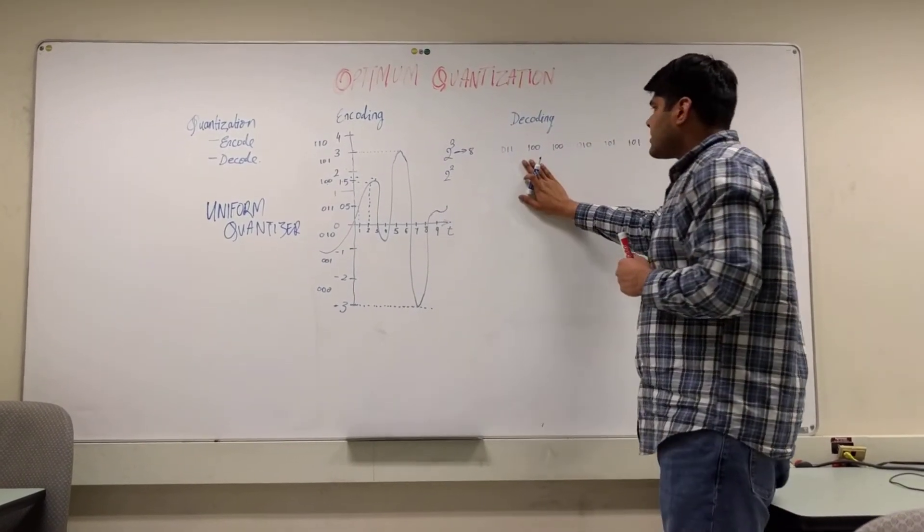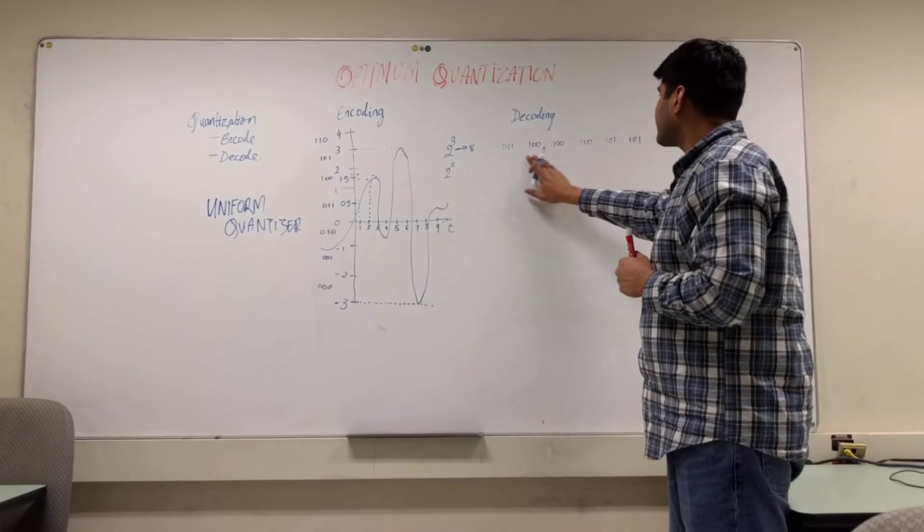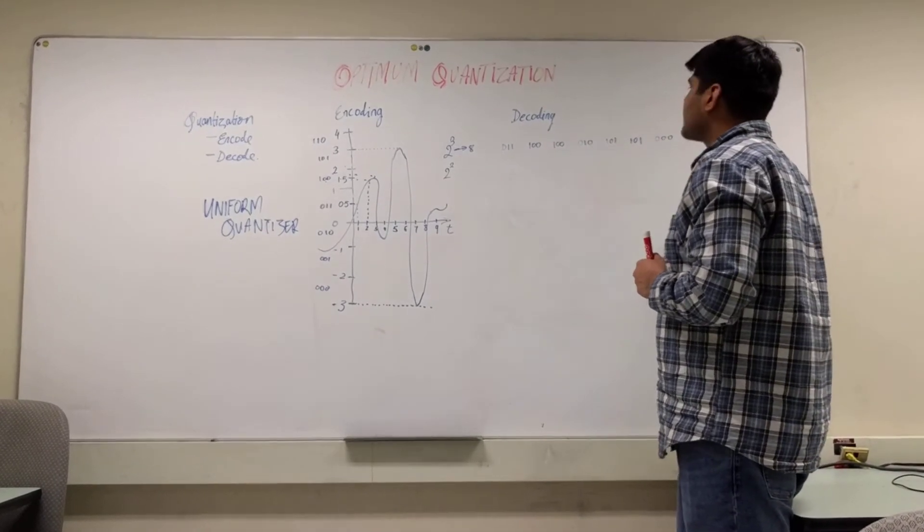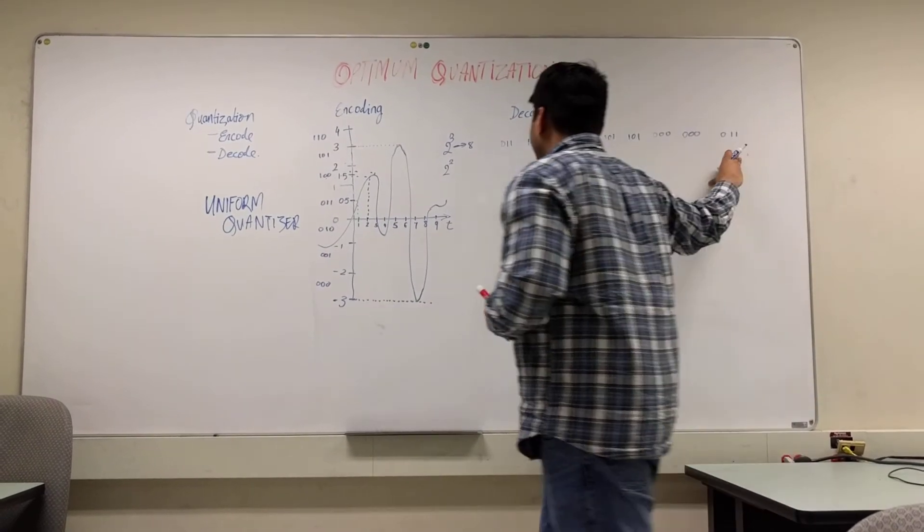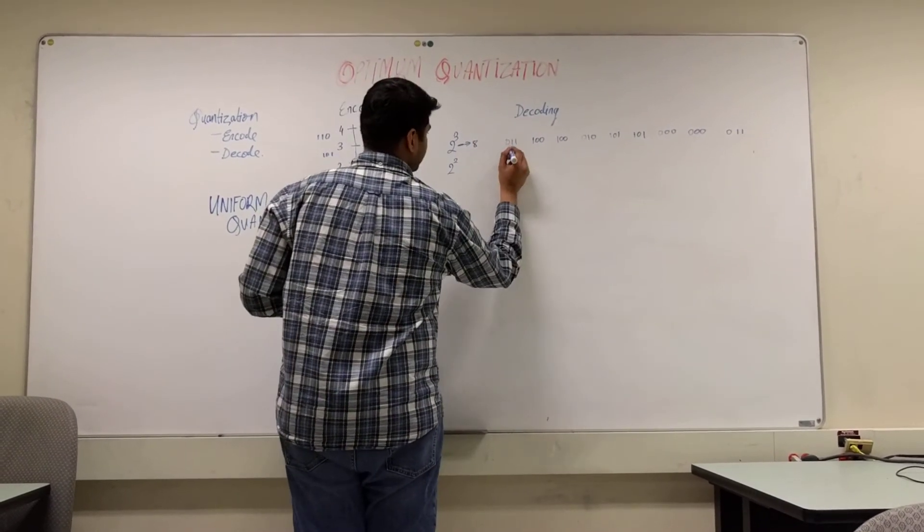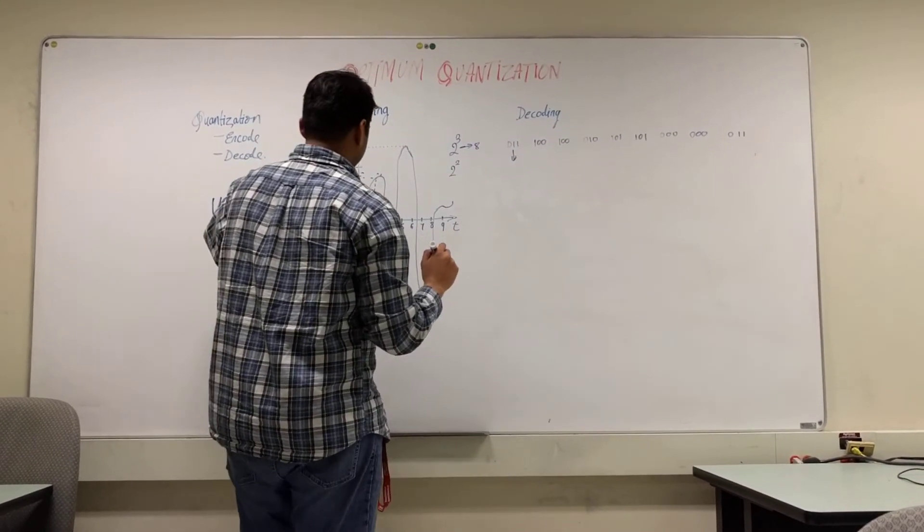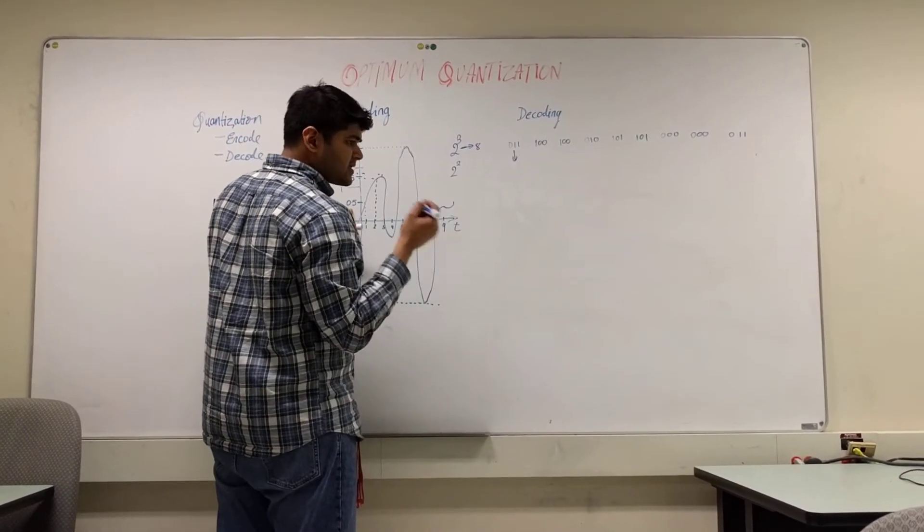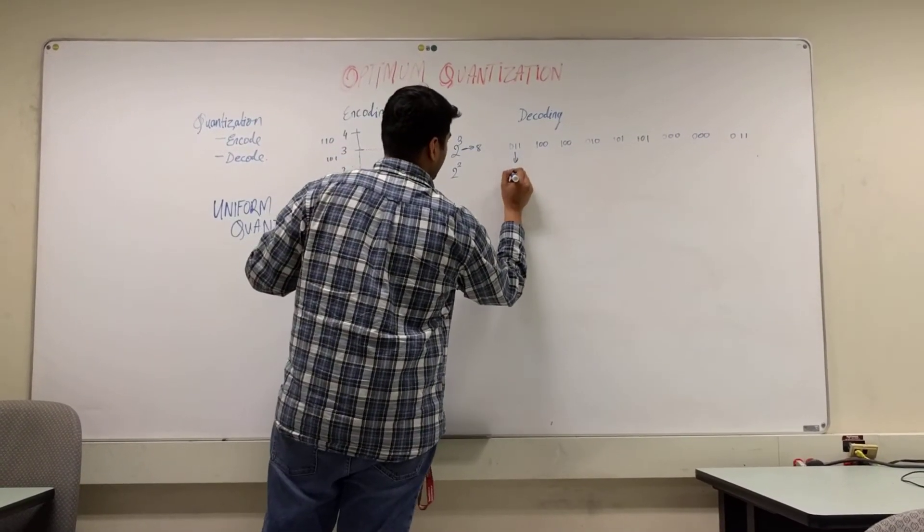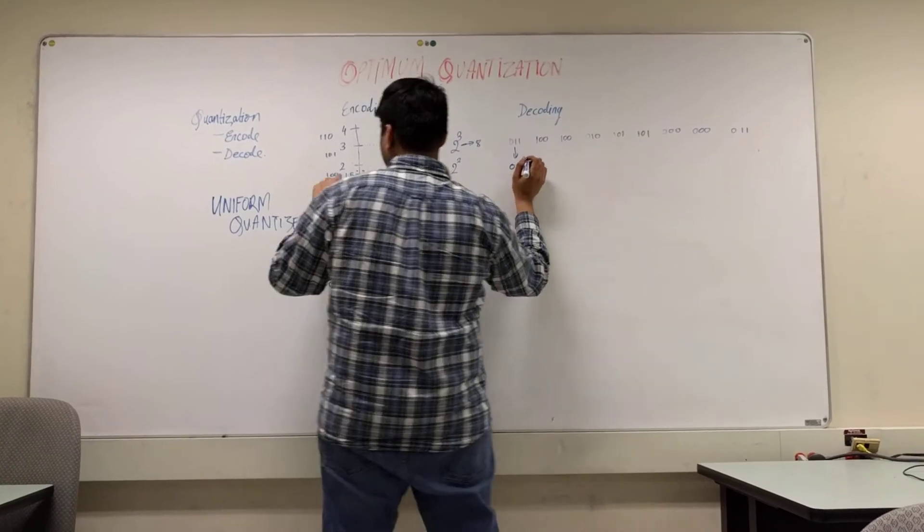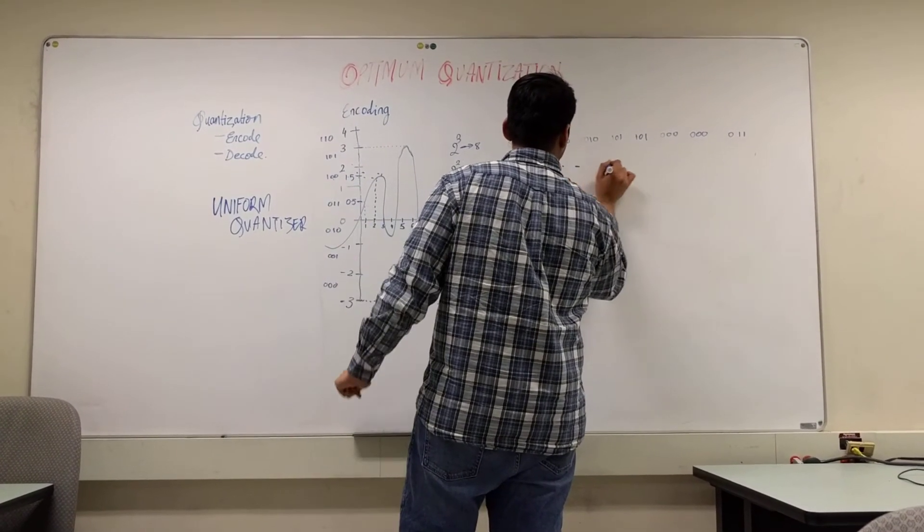During the decoding scheme itself, we see that this is the sequence of the bits that we have used to represent the particular signal that we have had over there. Now, all we have to do is give these the specific values associated with the centroid for the intervals. So, 0, 1, 1 would be 0.5, 1, 0, 0 would be 1.5, and so on and so forth.